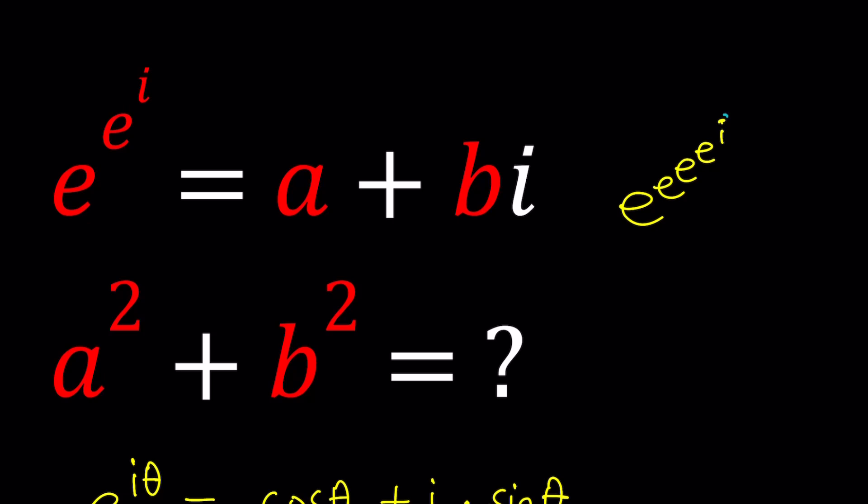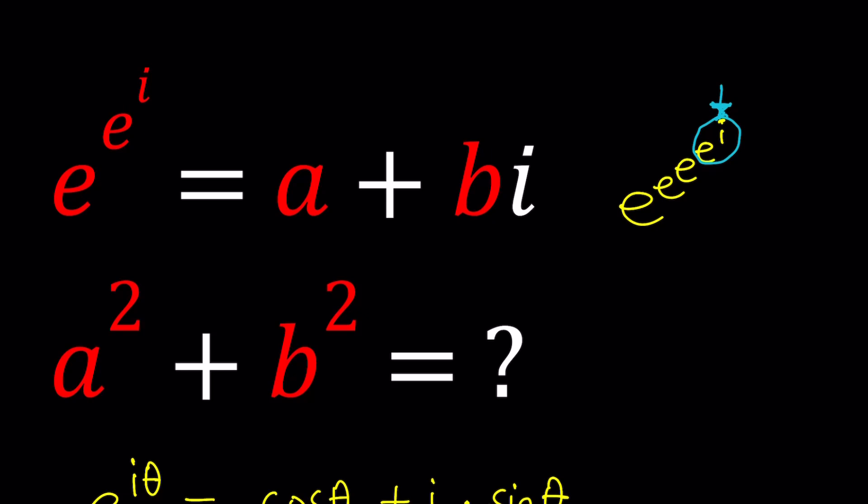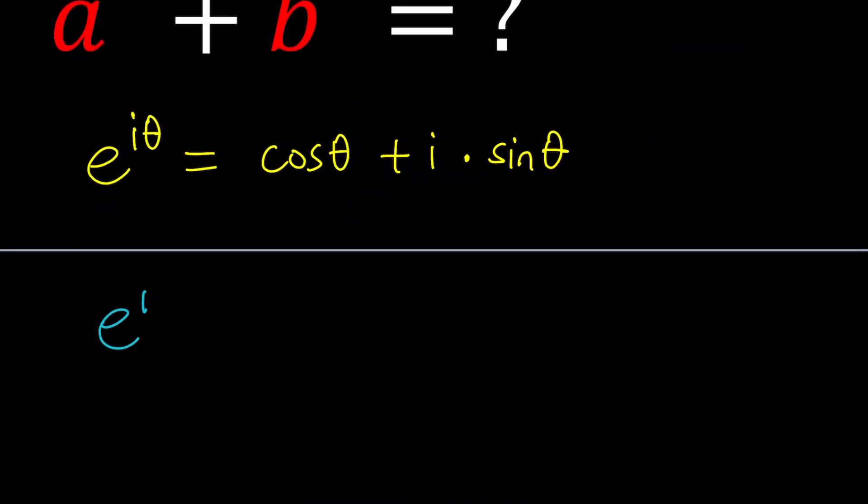Isn't that kind of crazy? Look, you have to start here. When you have a tower, exponential tower, you need to start at the very peak. Okay, great. So we're going to be looking at e to the i first. But what is e to the i?